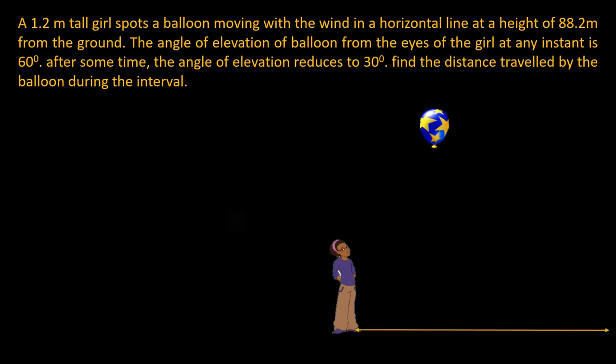The angle of elevation from our eyesight, that is from the horizontal line drawn at eye level, makes an angle of 60 degree with the balloon and the balloon is 88.2 meter height from the ground.